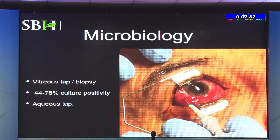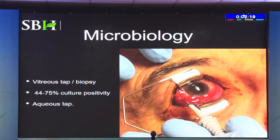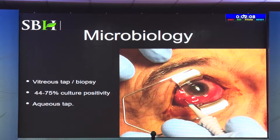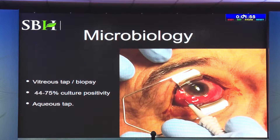Taking a vitreous tap is not easy, especially in young trauma patients. A needle aspiration can be done but it is better to do a vitreous biopsy with a cutter — it yields more sample and causes less traction. Positivity increases with a vitreous tap. If no sample is obtained by needle aspiration, you can insert the needle into a blood agar plate and send it for culture. As a last resort, an aqueous sample can also be sent, although the yield from aqueous is lower.